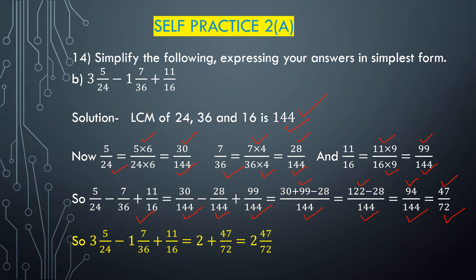The whole number part is 3 minus 1, which equals 2. The fractional part 5/24 minus 7/36 plus 11/16 simplifies to 47/72. So we get 2 plus 47/72, which equals 2⁴⁷/72, a mixed fraction.